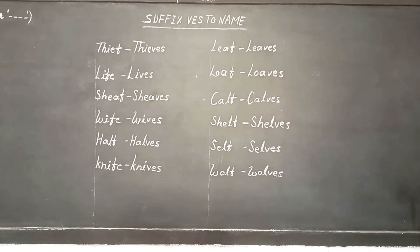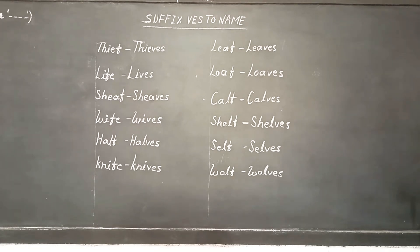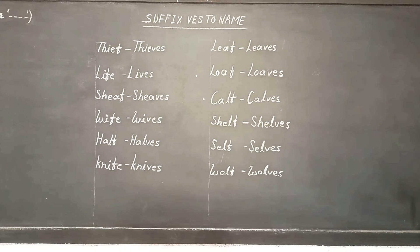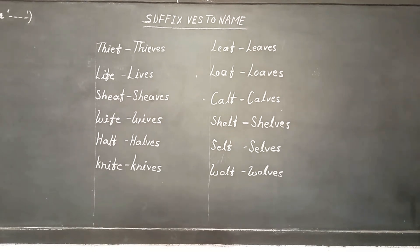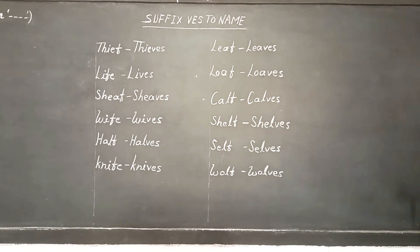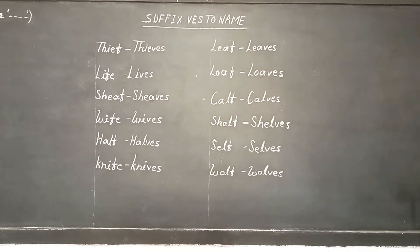The meaning of these words — if you don't know, please find them from the dictionary. Students of ASBES Spoken English will get the meanings easily in class. If you don't know, find from the dictionary. Then use the rule: remove F or FE and suffix VES.